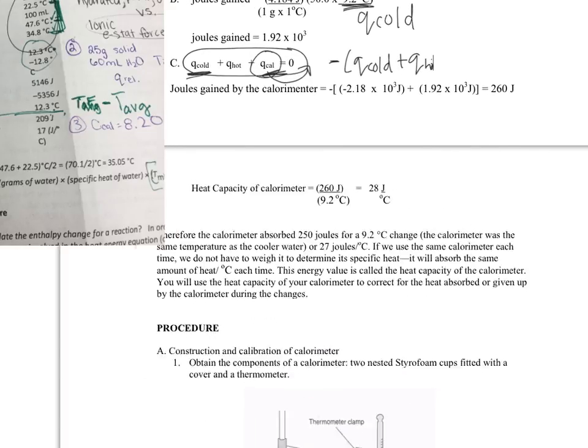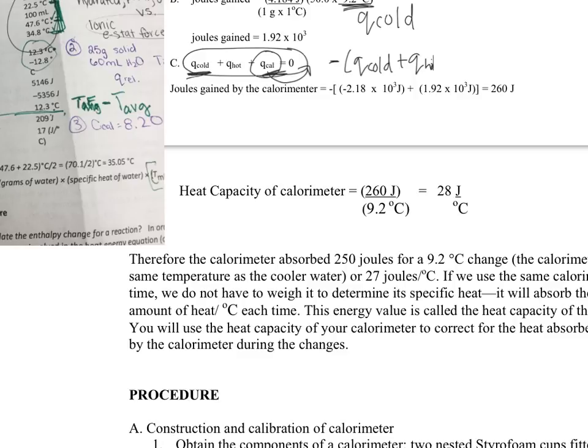Once you have that value, the final thing that you need to do is you're going to solve for your heat capacity of the calorimeter by dividing this value that you just found by your cold water change, your Q cold temperature change.